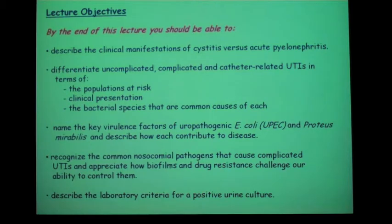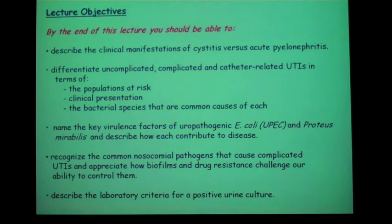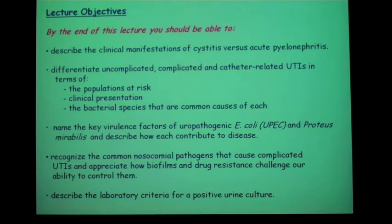Mostly what we'll be talking about today is cystitis and pyelonephritis, and three types of UTIs. One can divide UTIs into uncomplicated community-acquired UTIs, complicated and catheter-related UTIs. For each of those, we'll be talking about the populations at risk, the clinical presentation, and the main types of bacterial species associated with each one.